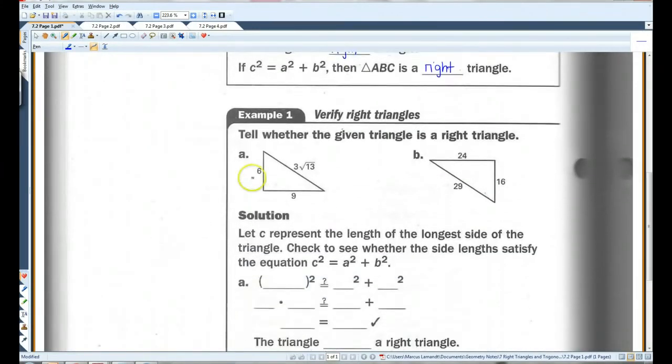So for example, if you are given this and you are told to tell whether the given triangle is a right triangle, you can check it using the Pythagorean Theorem. So like for this one, once again I'm using C squared equals A squared plus B squared. My C is 3 root 13. I've got 6 squared and 9 squared. 3 squared is 9.